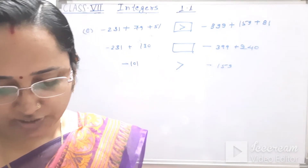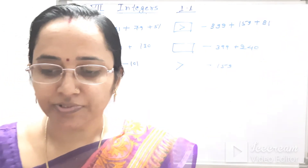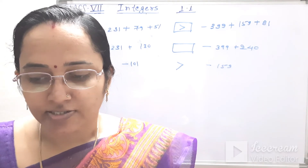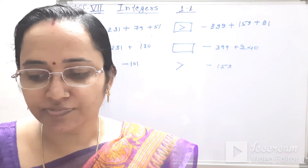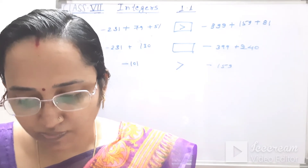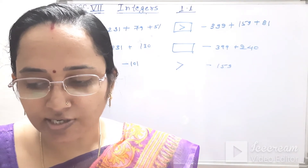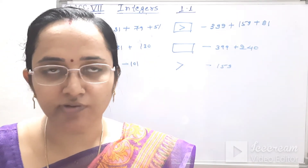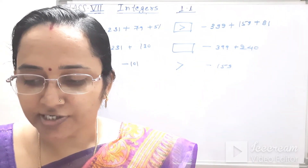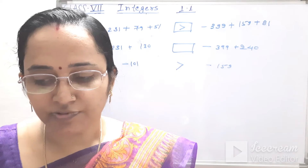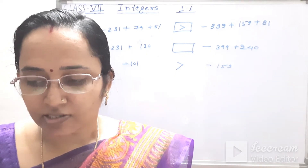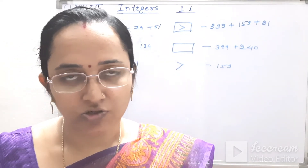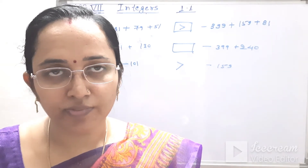Question number 10: A water tank has steps inside it. A monkey is sitting on the topmost step. The water level is at the ninth step. First he jumps three steps down and then jumps back two steps up. In how many jumps will he reach the water level? The equation is minus 3 plus 2 equals minus 8.